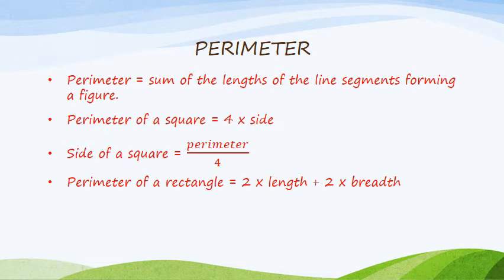When we come to specific figures like a square and rectangle, Perimeter of a square is equal to 4 multiplied by side, where side stands for each side of the square which are equal. We can find out the side of a square by dividing Perimeter by 4, so side of a square is equal to Perimeter divided by 4. Perimeter of a rectangle is equal to 2 multiplied by length plus 2 multiplied by breadth.